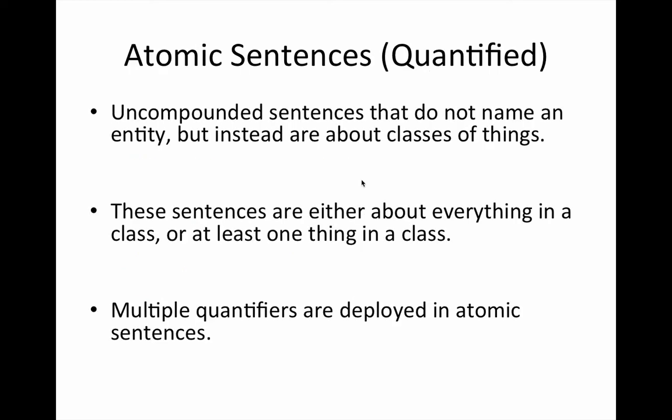It's not the case that we just talk about individually named things. Our atomic and compound sentences are not exclusively singular. We oftentimes use the language of classes or groups of things — that is, unnamed things. So we're talking in our system of logic about what are known as quantified sentences. Uncompounded sentences that do not name an entity but instead are about classes of things are atomic quantified sentences. When we're talking about dogs as a group — not specifically Stewart, Joe, or H — we would use a quantifier.